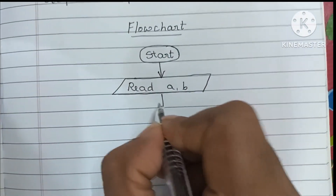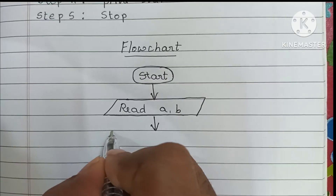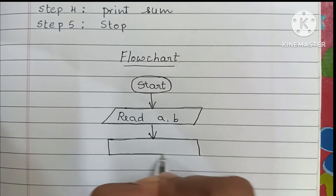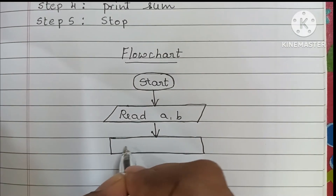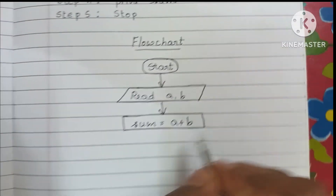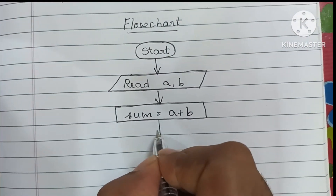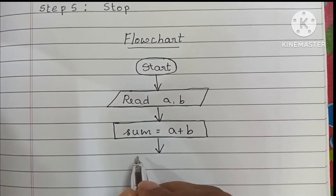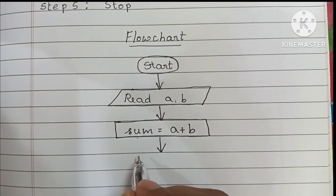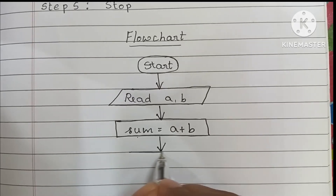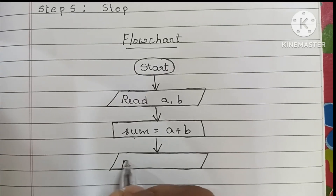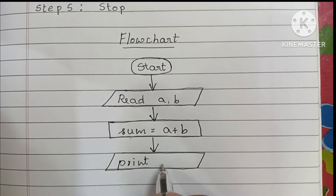Next, we have to calculate a plus b. Calculations are written within a rectangular shape, so we draw a rectangle and write: sum is equal to a plus b. Next, we have to print the sum — that is also written within a parallelogram shape: print sum.